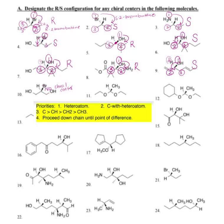Number eleven: again, we have two ethoxy groups. Therefore there is no chiral center here, and there is no R or S to name.